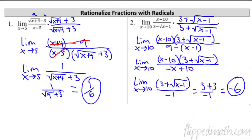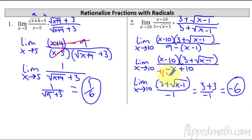Our answer here is negative 6. This one had a few tricky things going on. When you have the difference of squares, 3 squared is 9 minus this thing squared, and that negative needs to distribute through the parentheses — that's how you get the expression on the bottom. Then the trick is to factor out a negative 1. If you factor out a negative 1, that becomes x minus 10, which cancels with the x minus 10. But you still have that negative 1 on the bottom — that's where the answer comes from.